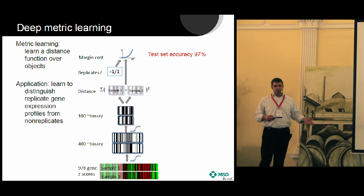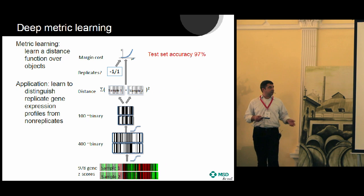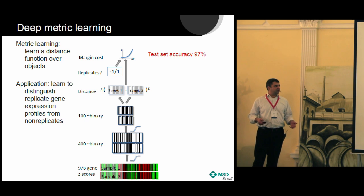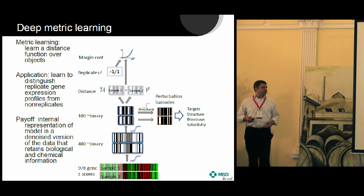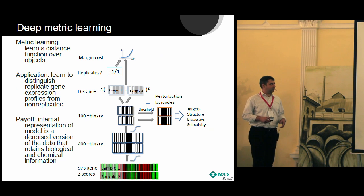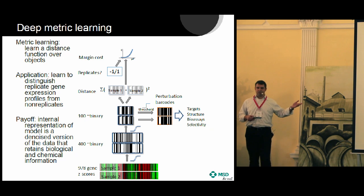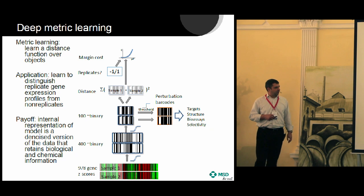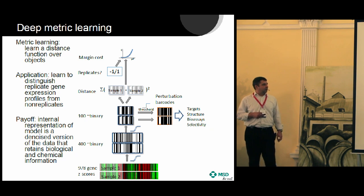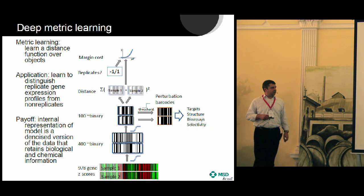It works pretty well. If you test it on a held-out test set, it's 97% accurate in terms of determining what's a replicate and what's not. But this isn't that interesting — we did the experiment, so we know what the replicates are. The payoff is that if you crack open this model and look at its internal representation, you can take the activations of this hidden layer — they're almost binary — and make them binary by thresholding. Now you have a 100-bit vector representing the information in this thousand-dimensional continuous sample.